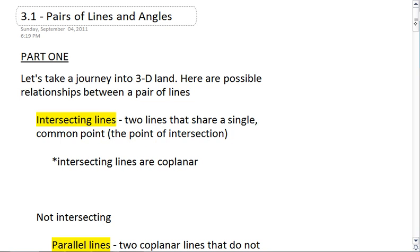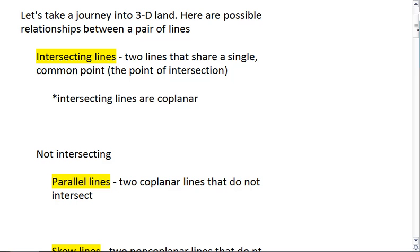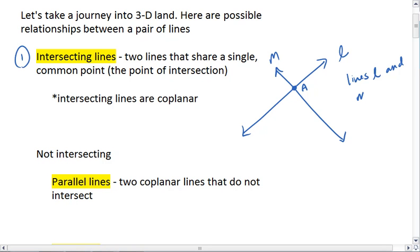The first possibility is intersecting lines. With intersecting lines, two lines share a single common point, and that's the point of intersection. For example, if I had line L which intersects with line M at point A, so lines L and M are intersecting lines.